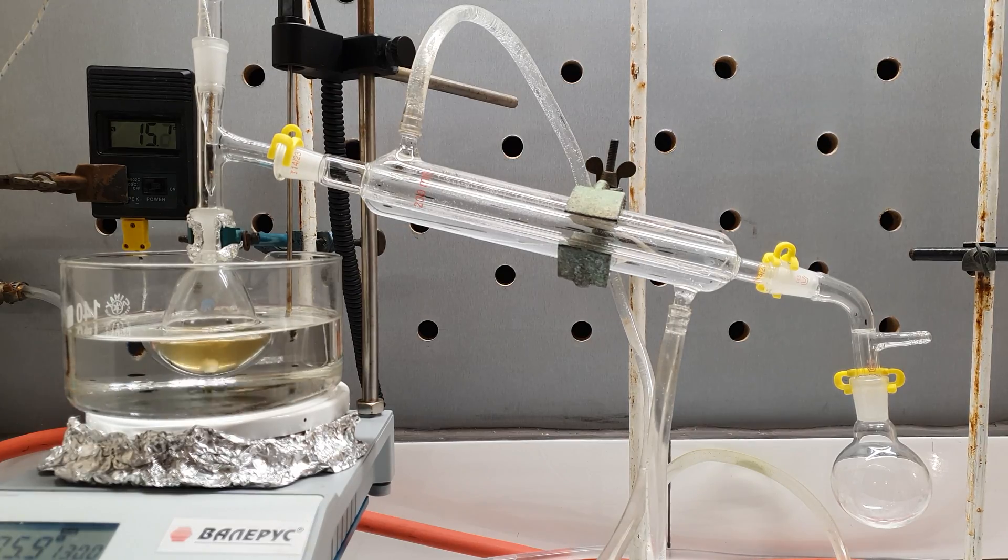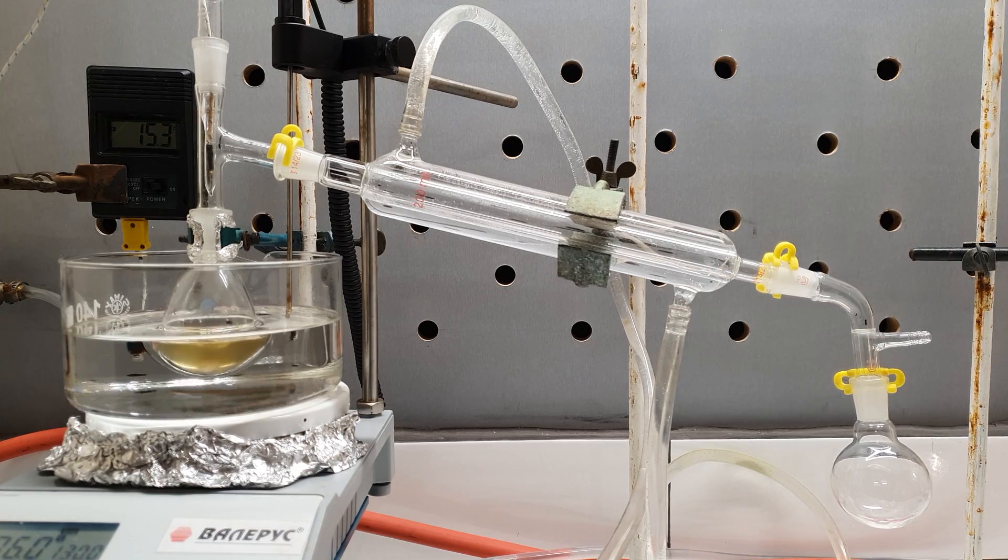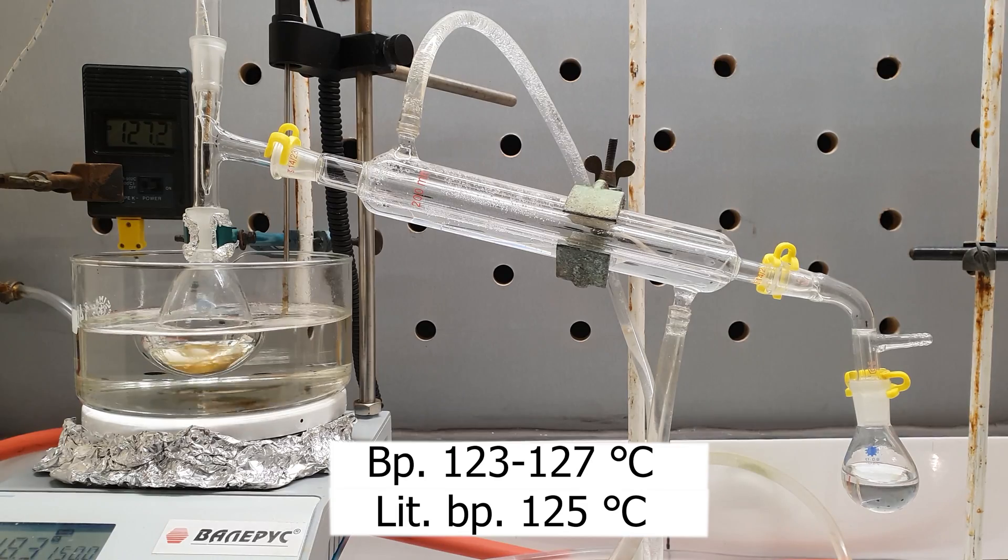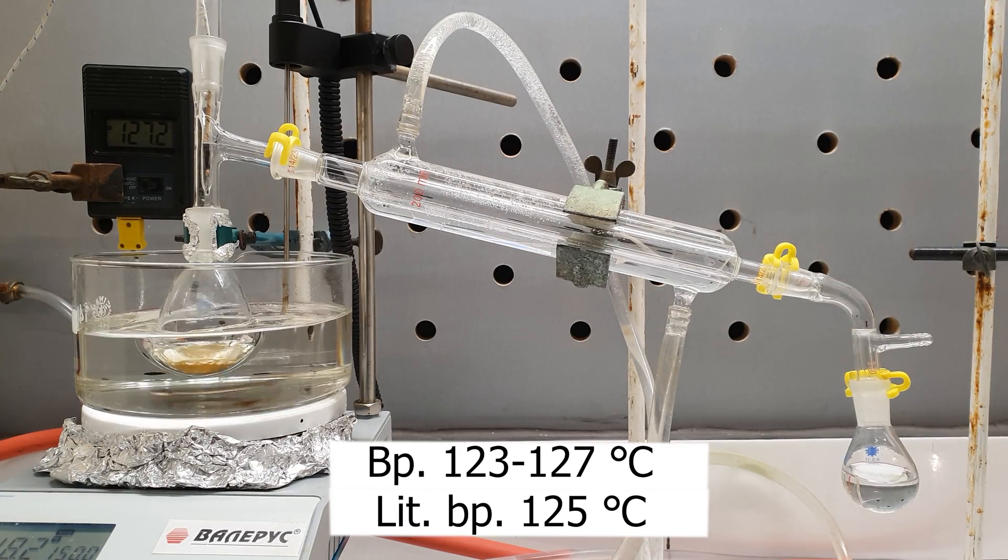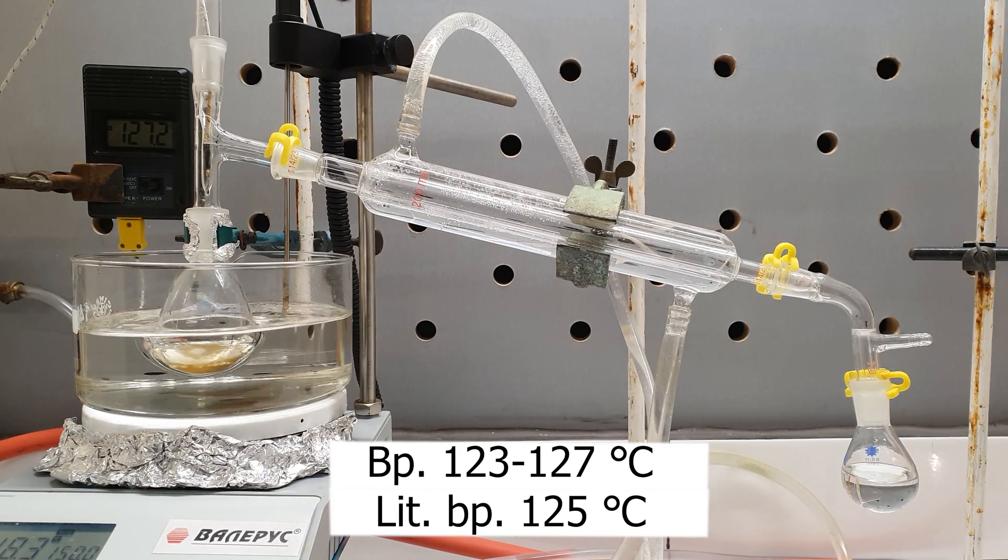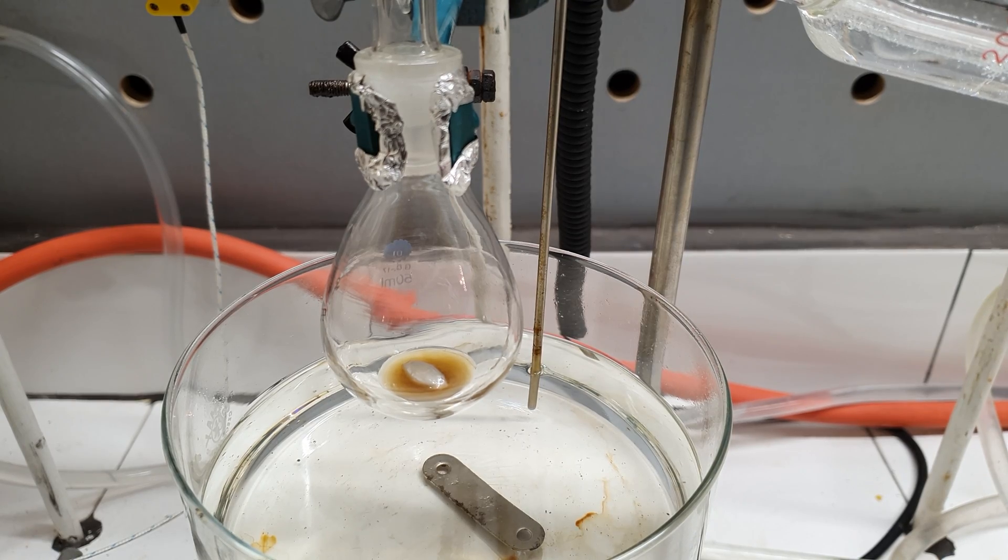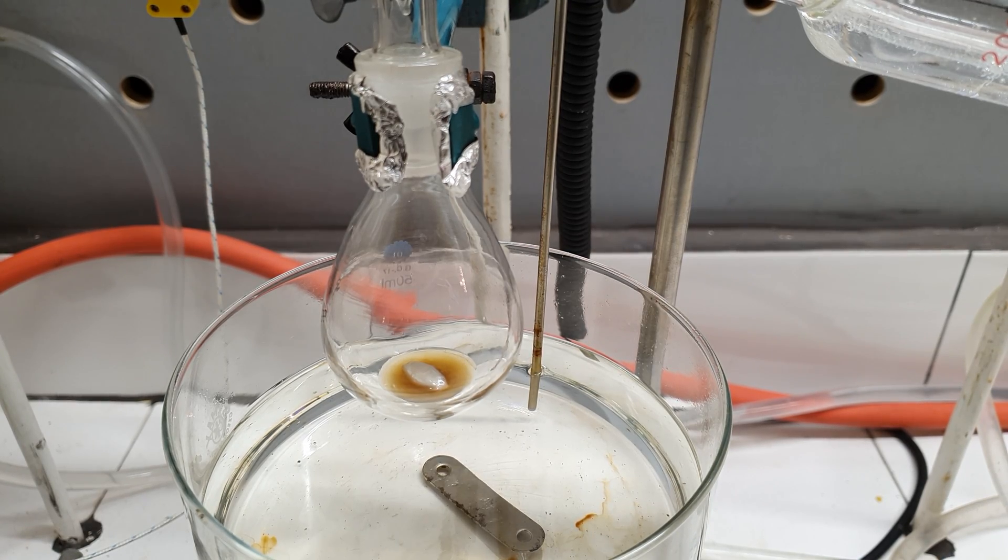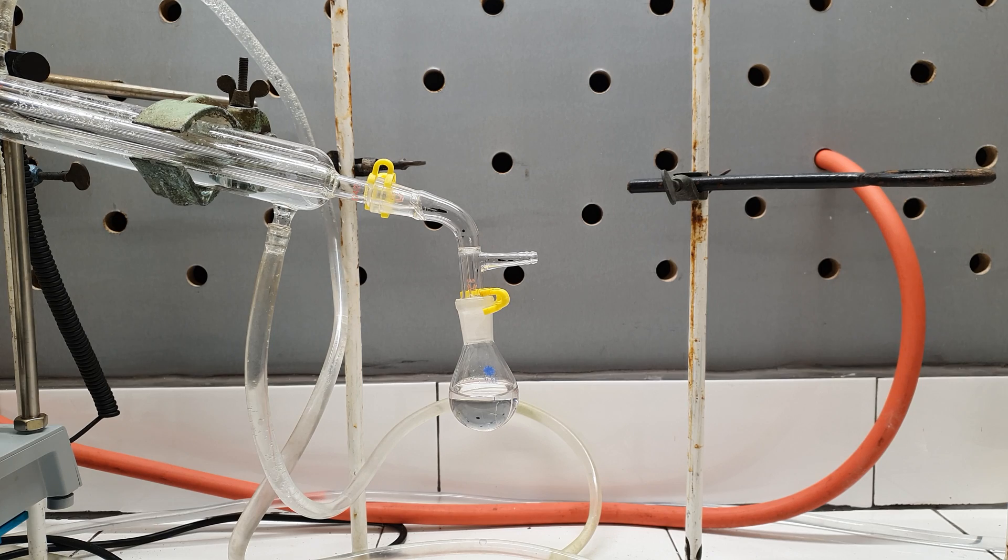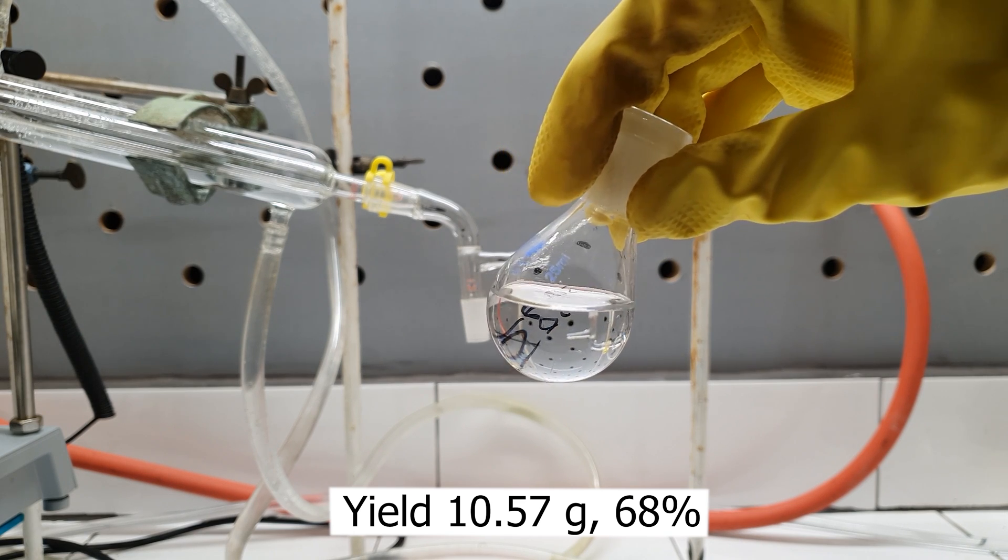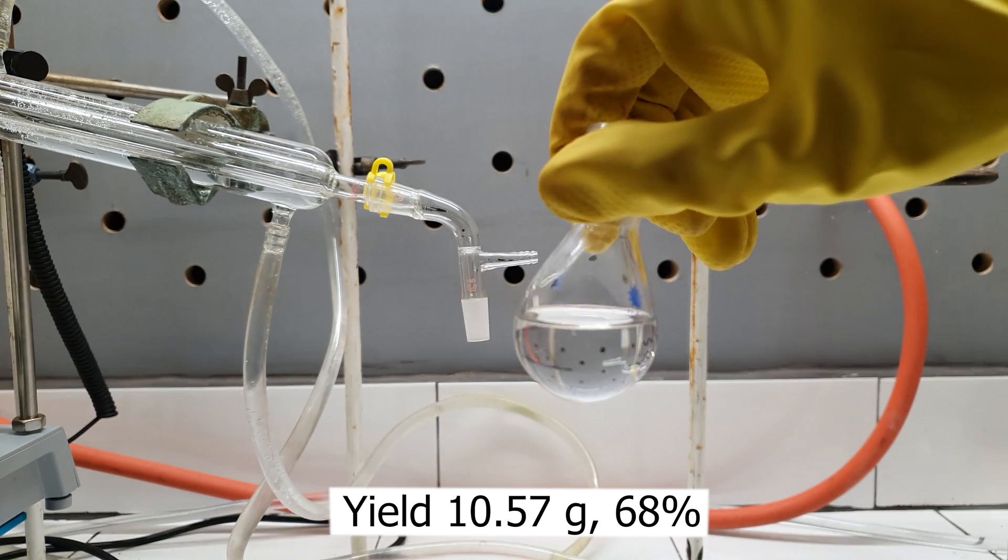Then a simple distillation was arranged. All the octane came between 123 and 127 degrees Celsius which corresponds well to its boiling point which is 125. In the distillation flask, I was left with brown colored liquid. And in the receiving flask is the octane. My yield was 10.57 grams which corresponds to a percent yield of 68.